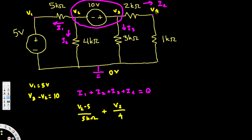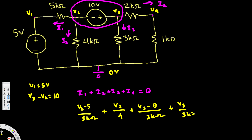For i4, we could write V3 minus V4 over 2, but that creates two unknown variables. Since those two resistors are in series, we can combine them into 3 kilohms connected to ground, giving V3 over 3 kilohms. i3 is also V3 over 3. We can combine i3 and i4 together, giving 2V3 over 3.